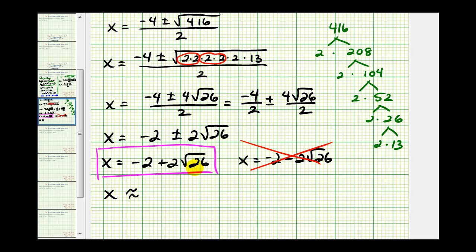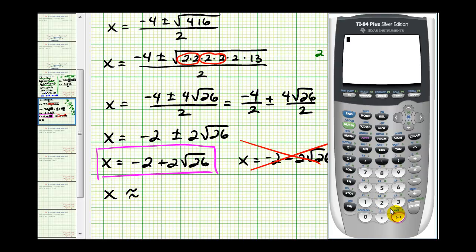So we'll enter this into the calculator. We have negative two, plus two, square root 26. So the decimal approximation for x is 8.1980.